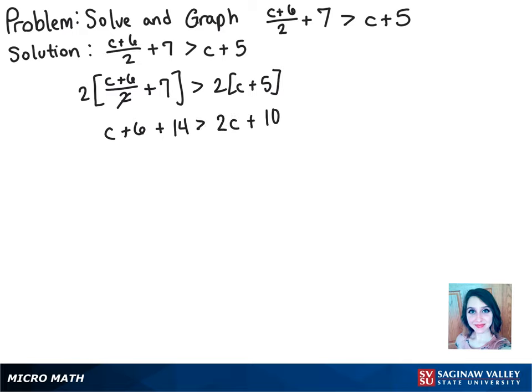And then it's greater than 2c plus 10. Now we can combine the constants, so we have c plus 20 is greater than 2c plus 10.